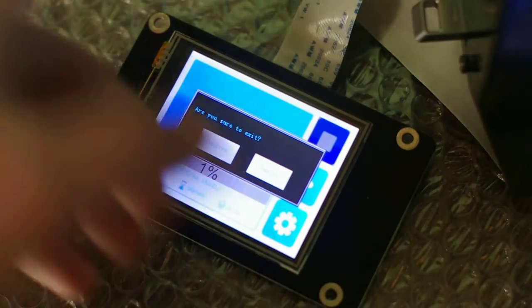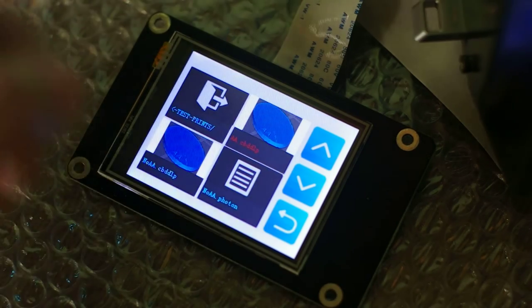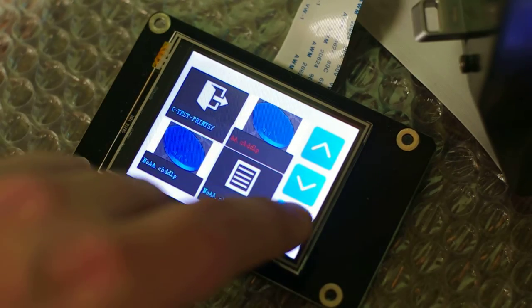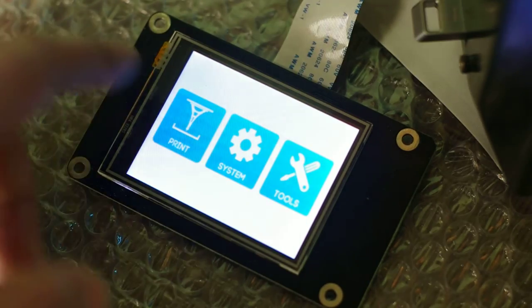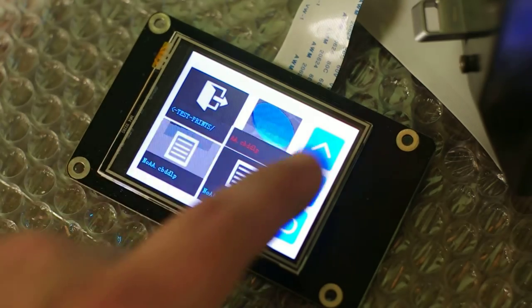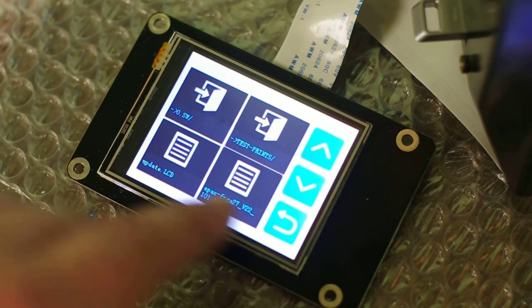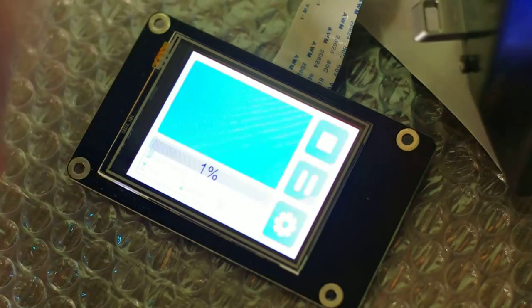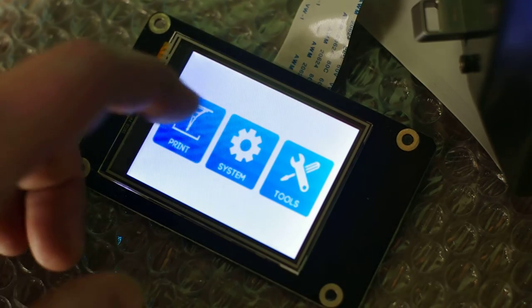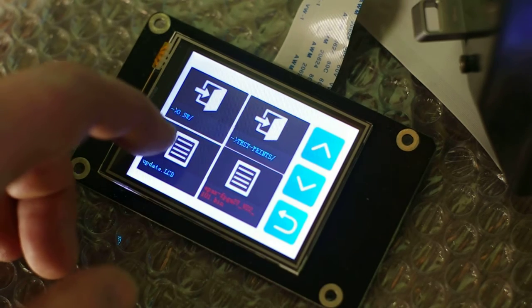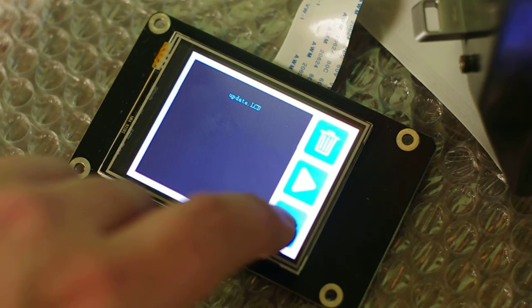So one last thing. The firmware was already installed, I forgot to run the correct process, that was to print the bin again and to print the update.lcd. Okay, in this case it's done.